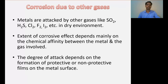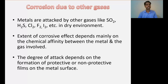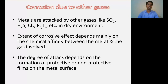The degree of attack depends upon the formation of protective and non-protective films on the metal surface. When metal reacts with the surrounding gases, it forms a corrosion product that is deposited on the metal surface. This corrosion product may produce different types of layers — stable, unstable, or volatile. In the case of a stable corrosion product, it may produce a porous or non-porous oxide layer. If the layer is porous, corrosion will continue; if non-porous, corrosion will be reduced.